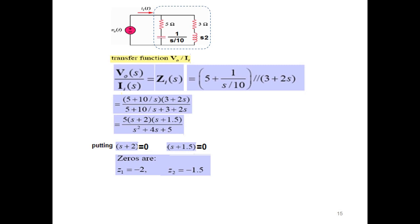After simplification, this is the final answer for the transfer function. Now for the second part, we find zeros and poles. For zeros, we put the numerator equal to zero. Setting s + 2 = 0 gives z1 = −2, and setting s + 1.5 = 0 gives z2 = −1.5. These are the two zeros.